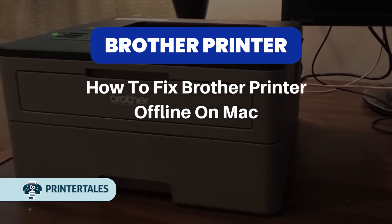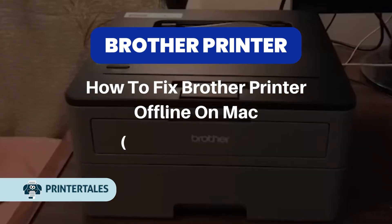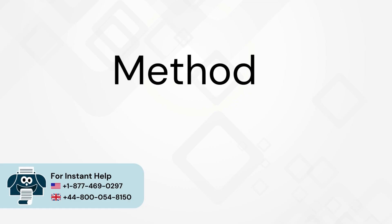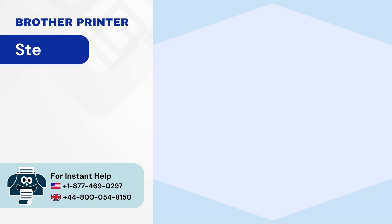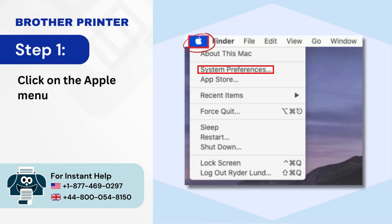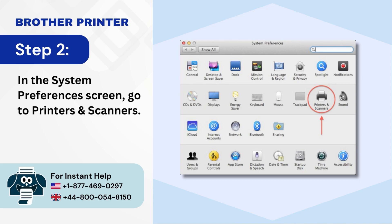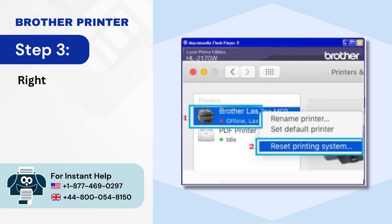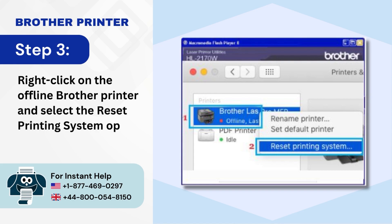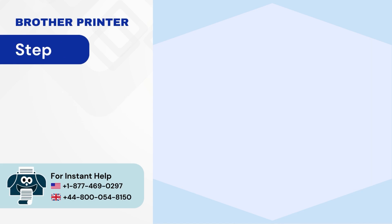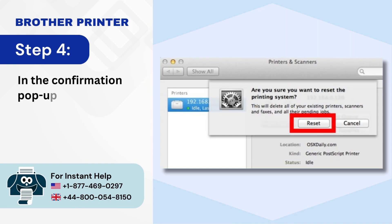How to fix Brother Printer Offline on Mac — 6 quick methods. Method 1: Restart your system. Step 1: Click on the Apple menu and select System Preferences. Step 2: In the System Preferences screen, go to Printers and Scanners. Step 3: Right-click on the Offline Brother Printer and select the Reset Printing System option. Step 4: In the Confirmation Pop-up window, click on Reset to confirm.